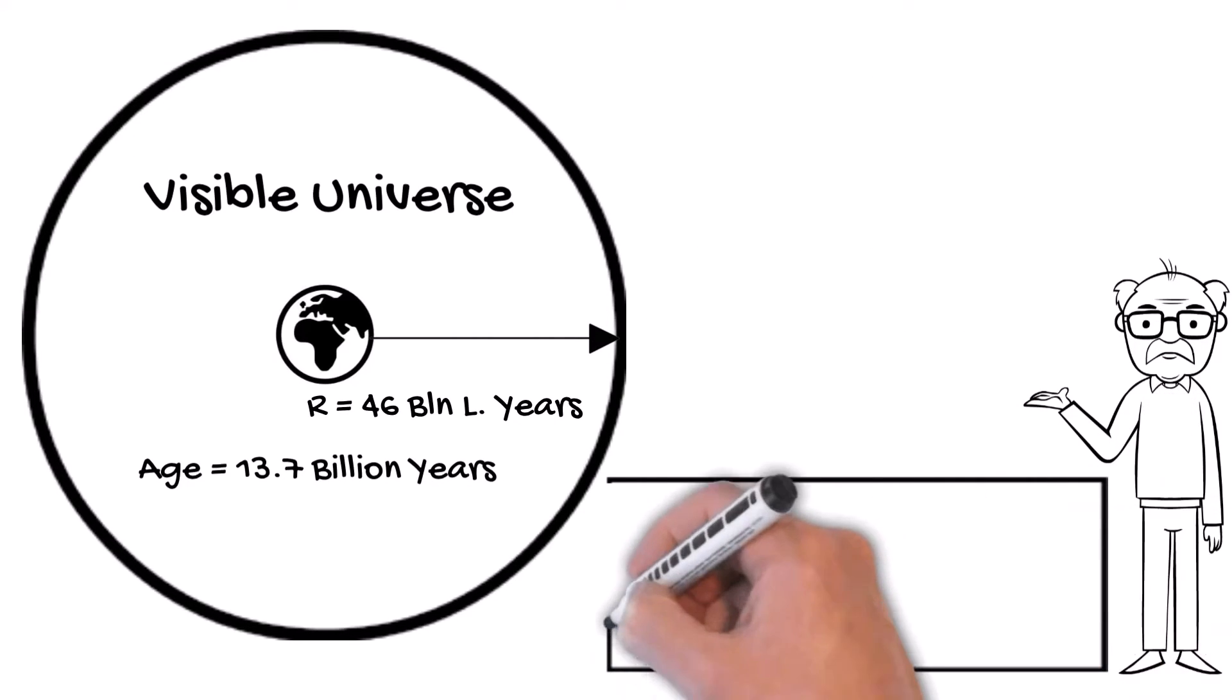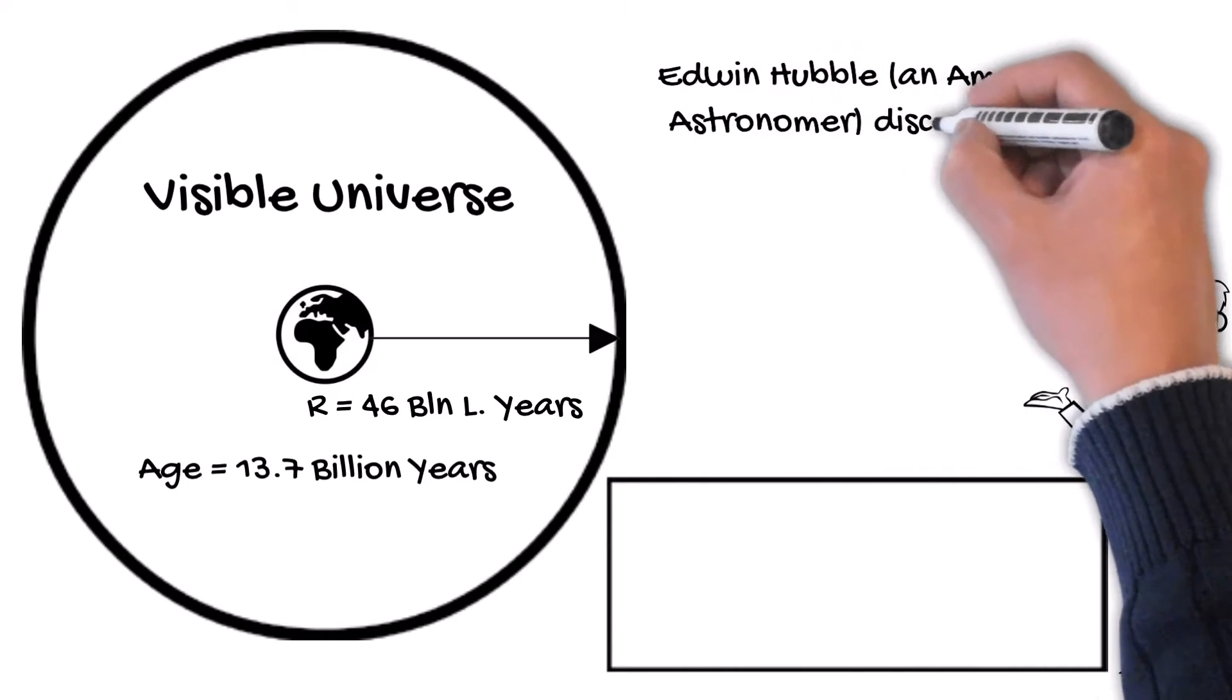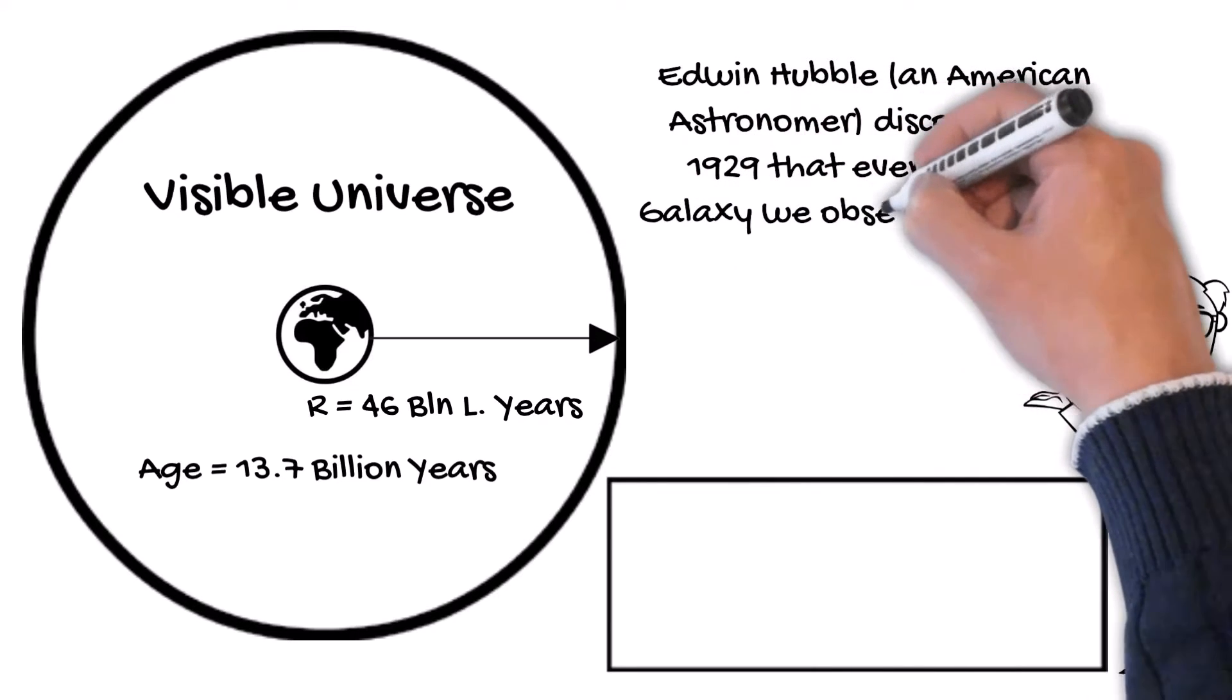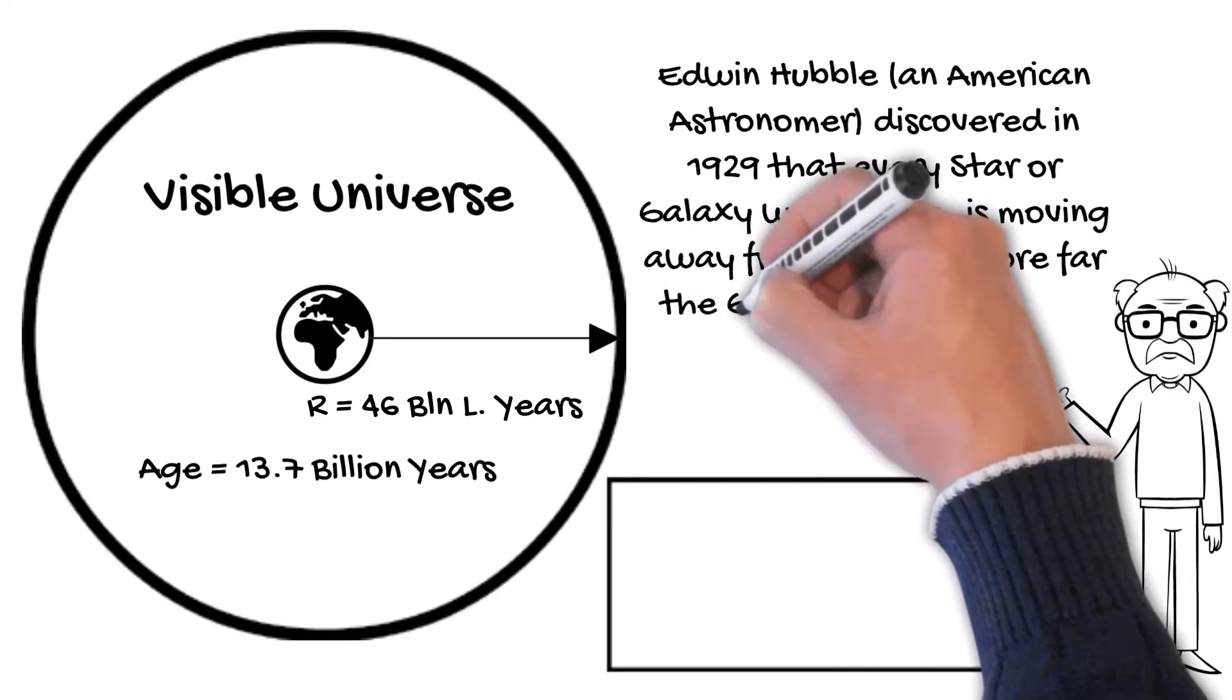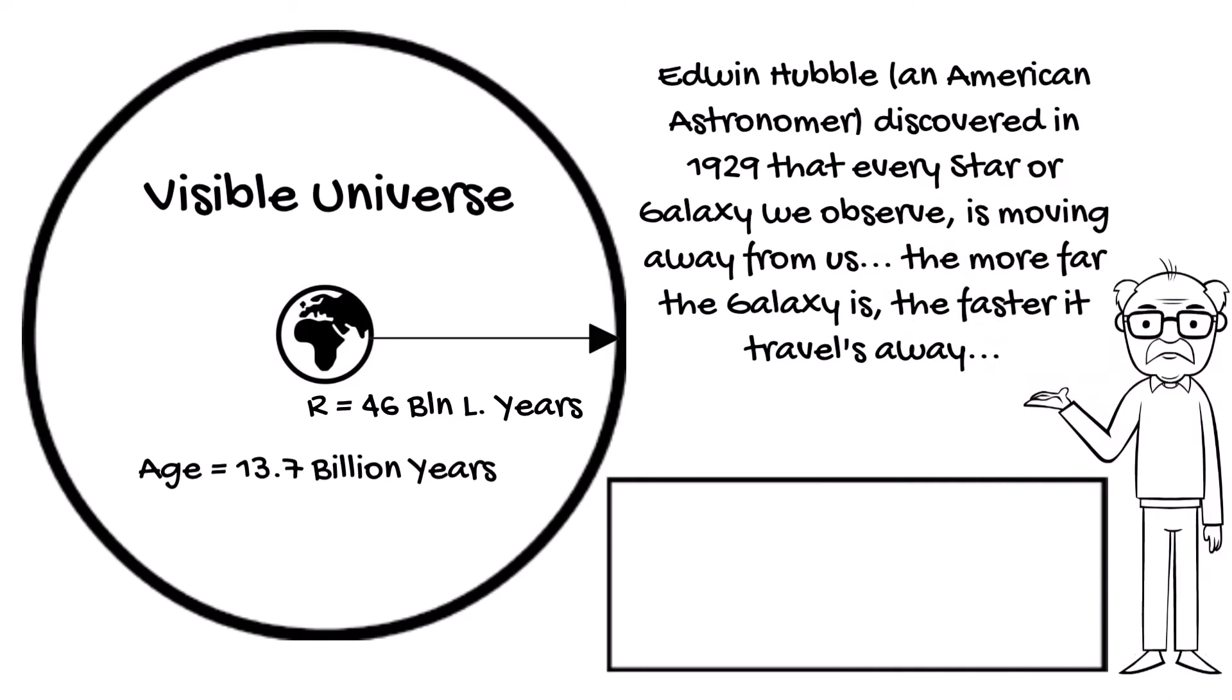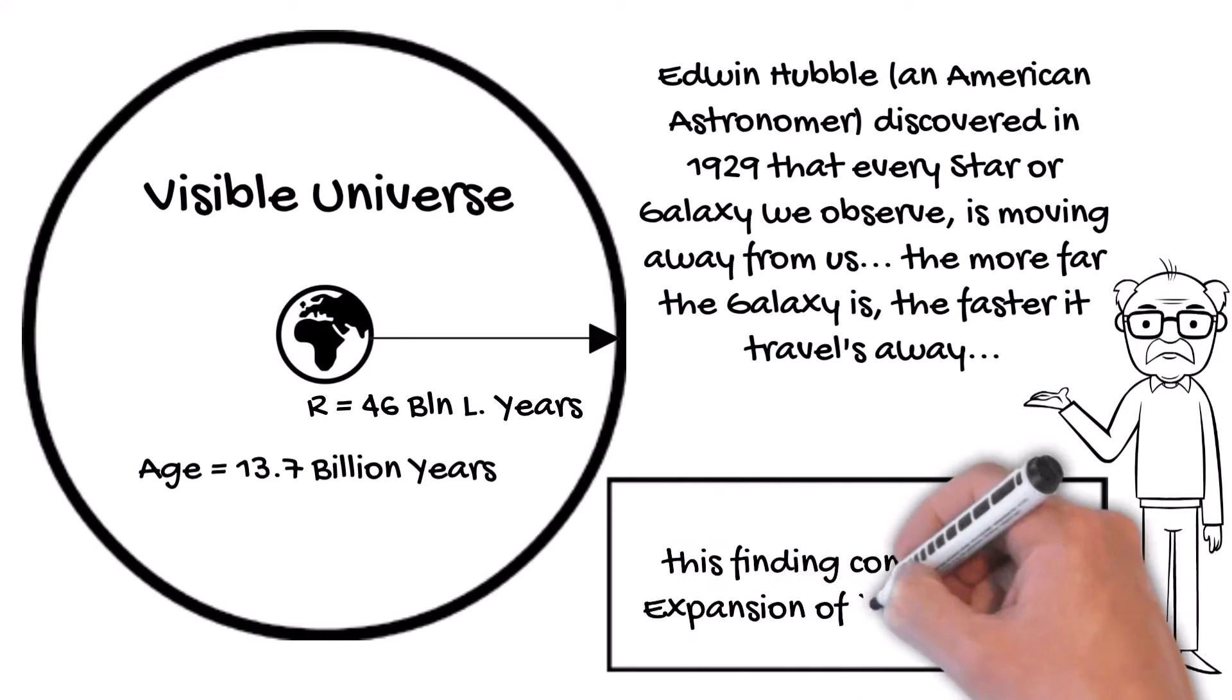Edwin Hubble, an American astronomer, discovered in 1929 that every star or galaxy we observe is moving away from us. The farther the galaxy is, the faster it travels away. This finding confirmed the expansion of the universe.